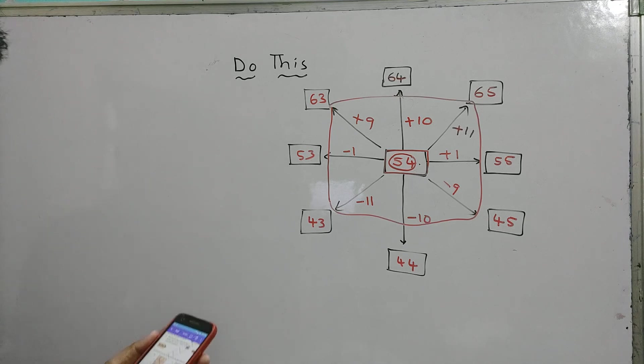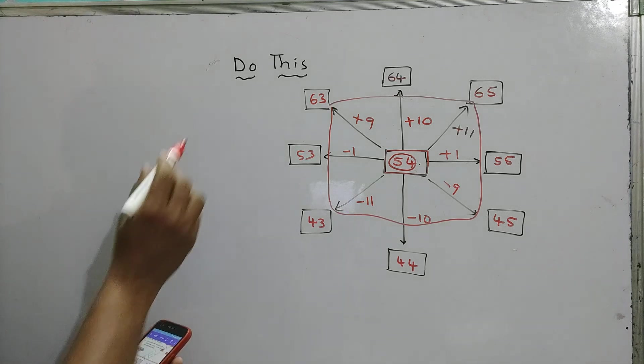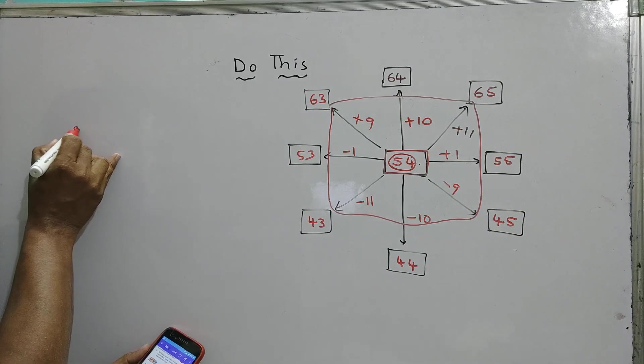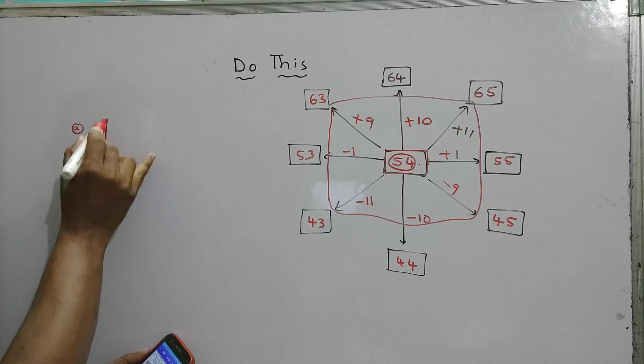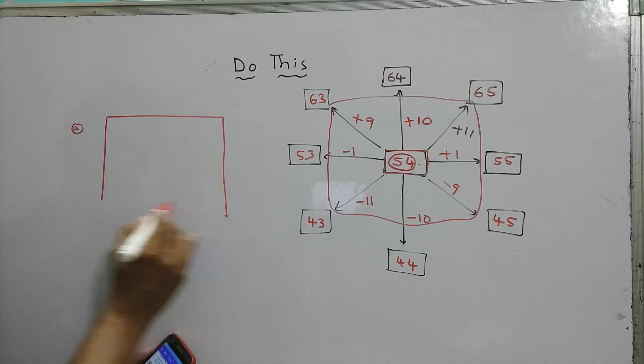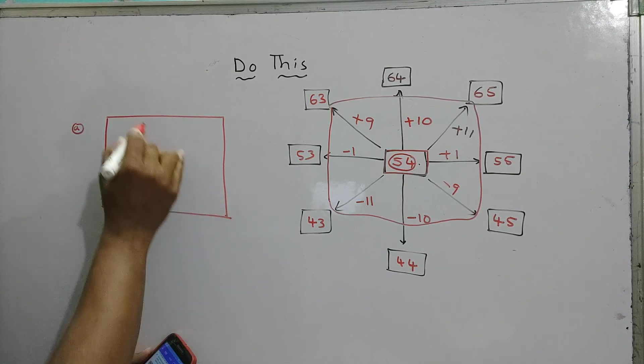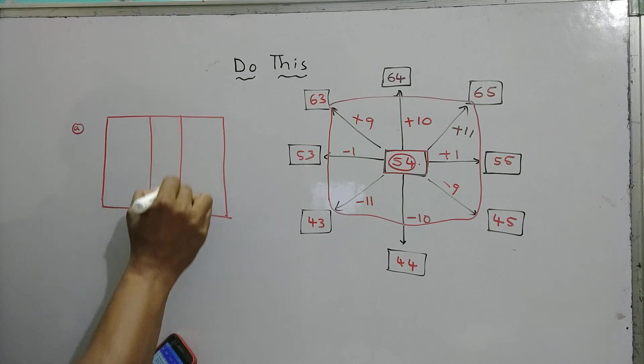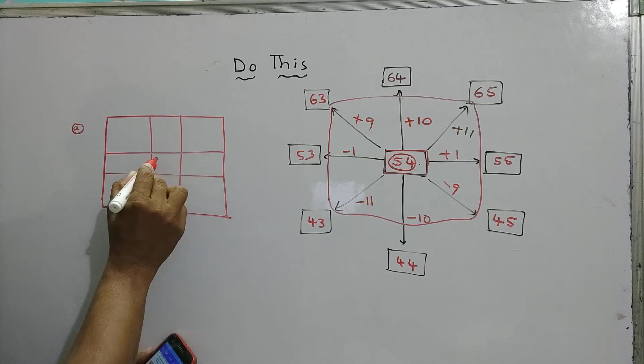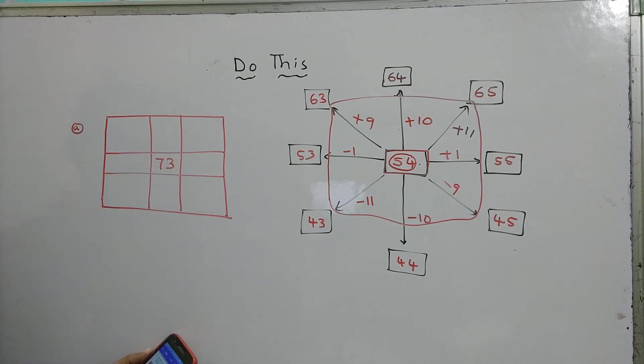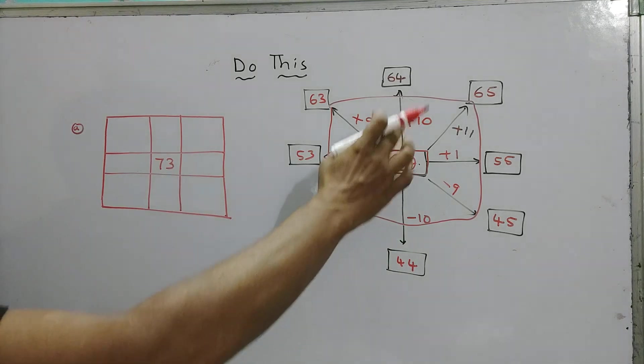You have in your page number 4 some boxes are there. Now fill the 'do this' activity is there. So A, I wanted to explain to you. See like this. 73 is there. So here by observing this picture.